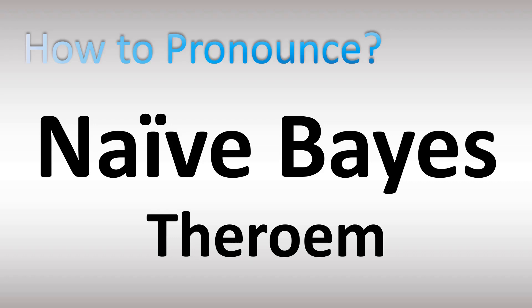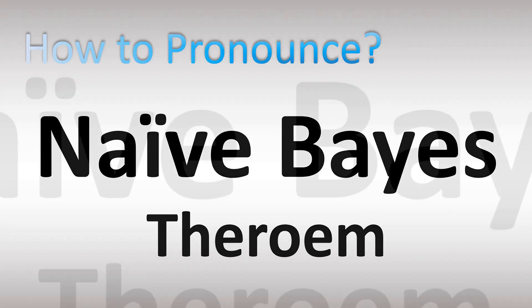How do you pronounce these? This is the name of this theorem or algorithm classifier. Naive? Naive? Bayes. Yeah, Bayes. Naive Bayes. Now you know.